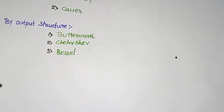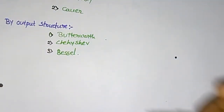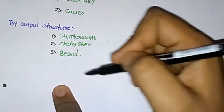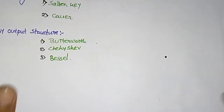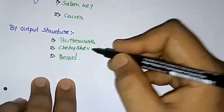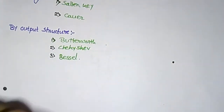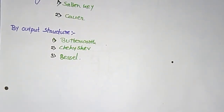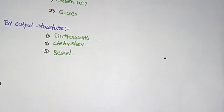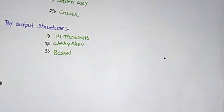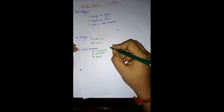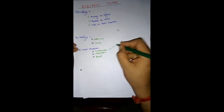By output structure, filters can be divided into many categories: Butterworth filter, Chebyshev filter, Bessel filter, elliptical filter, etc. Since the Butterworth filter has a flat passband and flat stopband, basically we use the Butterworth filter. I'll discuss more about the Butterworth filter specifically.